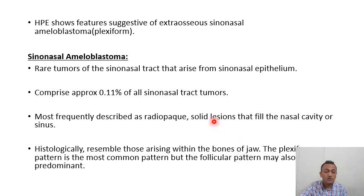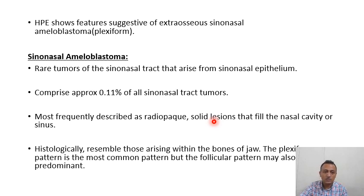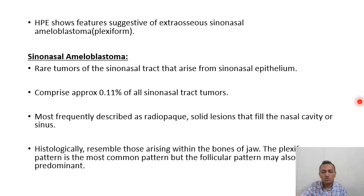Histopathology is suggestive of extraosseous sinonasal ameloblastoma, plexiform type. Sinonasal ameloblastomas are rare tumours of the sinonasal tract that arise from the sinonasal epithelium, comprising 0.1% of all sinonasal tract tumours, most frequently described as radiopaque solid lesions filling the nasal cavity or sinus. Histologically they resemble those arising from the bones, most commonly showing the plexiform pattern, though the follicular pattern may also be seen.